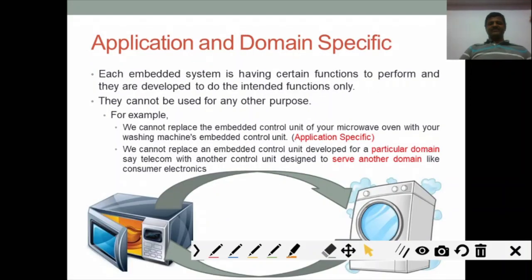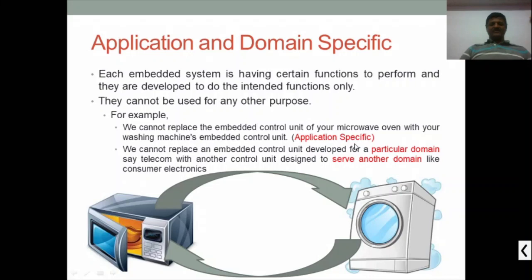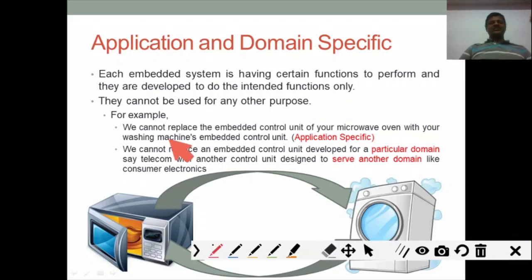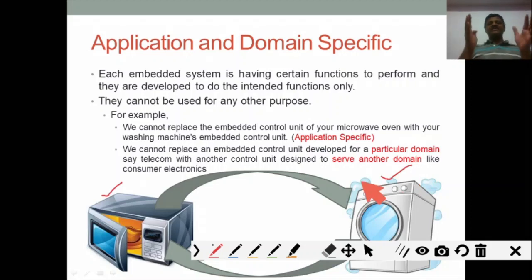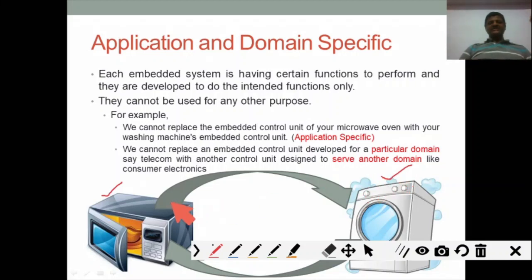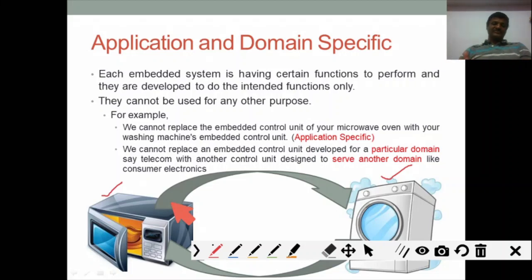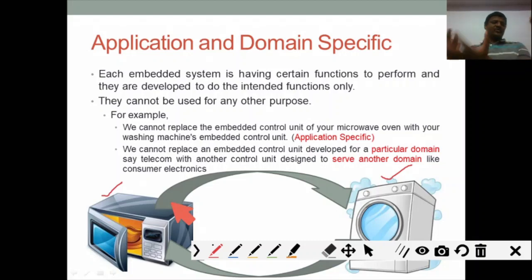Application-specific means a microwave and a washing machine are both embedded systems, but you cannot interchange their control units. The control unit of a microwave is unique to the microwave, and the control unit of a washing machine is unique to the washing machine — you can't replace or interchange them. Each is application-specific.